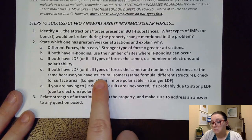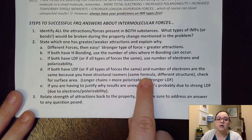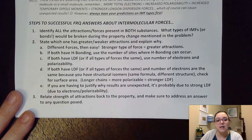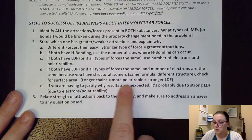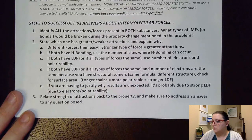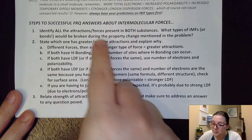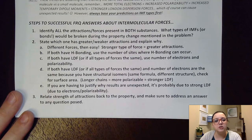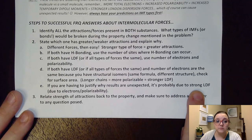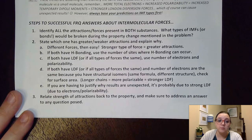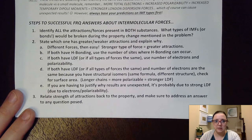That's where I have to look to see if maybe I have some structural isomers where I have the same formula but a different structure. If that's the case, then what we check for is the surface area of those molecules. Longer chains are more polarizable because they have more surface area, and so that would lead to stronger London dispersion forces. Sometimes you are given data that contradicts these predictions, and if you're having to justify why results are not what you expect them to be, it's most likely due to having strong London dispersion forces from a great number of electrons and high polarizability.